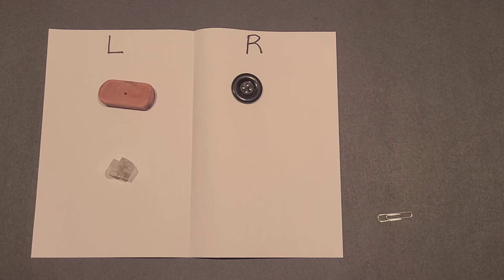If you don't have small objects available, you and the child can draw things on the left or right of the paper instead.